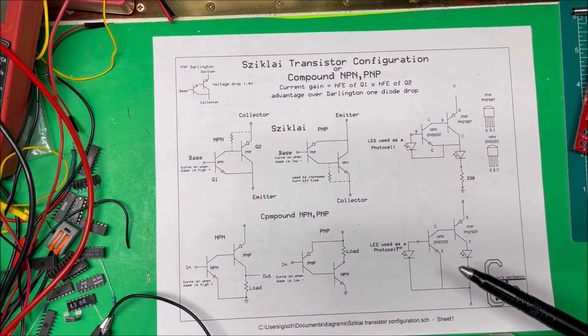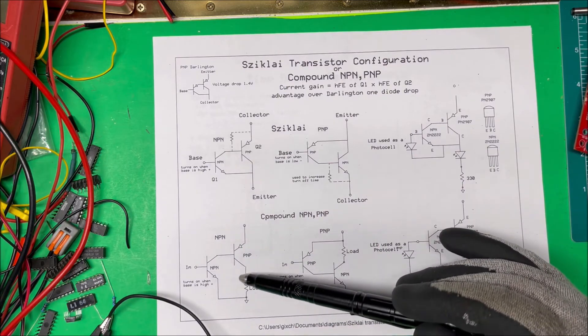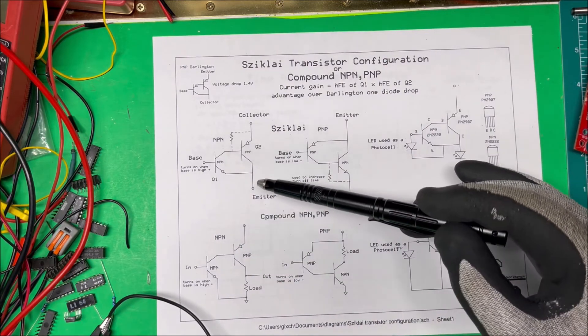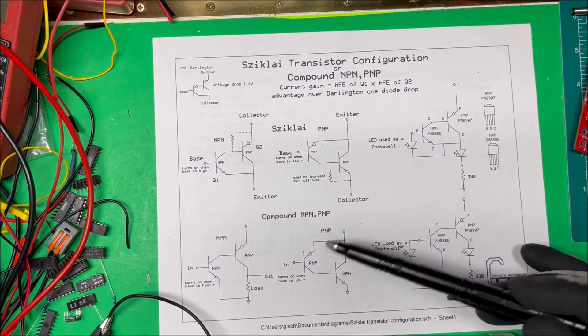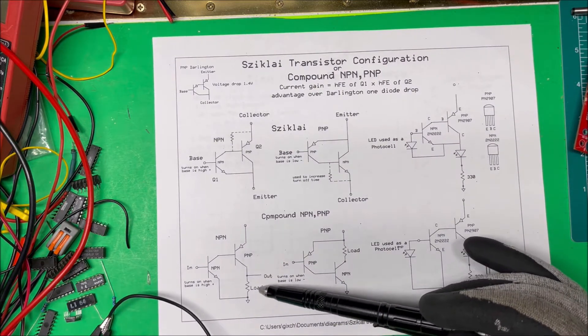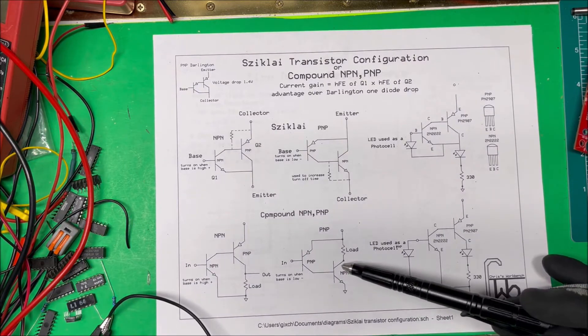A compound NPN or PNP is hooked up the same way except we take the load and put it right in this area here. You could just have a resistor here and your output if you want to drive a speaker or something.